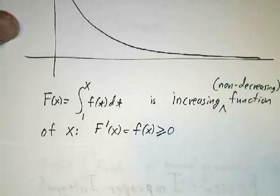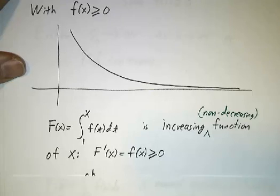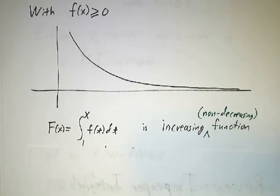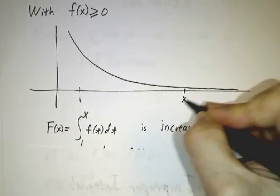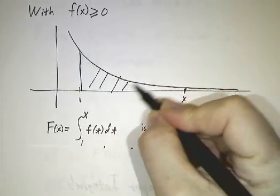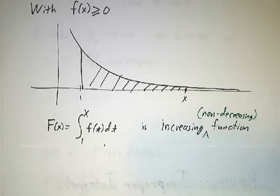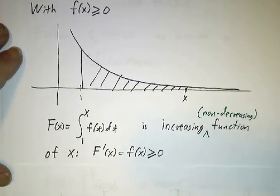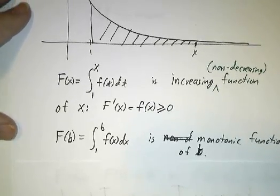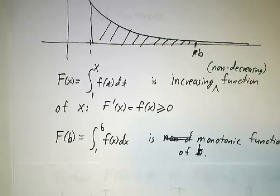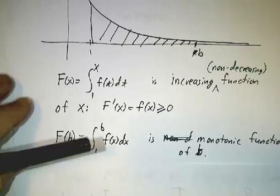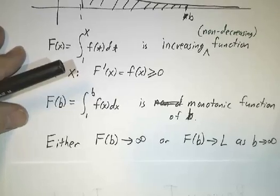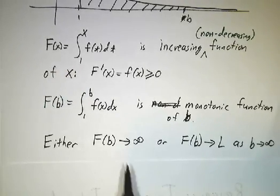We're interested in the integral from 1 to infinity, which we compute by taking the integral from 1 out to x. If we call that capital F, that's the antiderivative and it's a non-decreasing function because its derivative is the original function — that's the fundamental theorem of calculus. The integral from 1 to b is an increasing function of b, and two things can happen: either it grows without bound and diverges to infinity, or it approaches a finite limit as b goes to infinity.